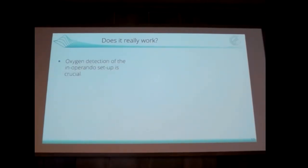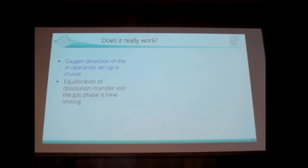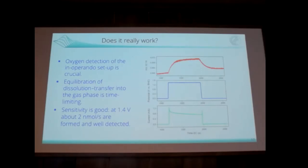Does it really work? Yes — we can detect the little amount of oxygen formed from this specimen while we shine X-rays on it, which also proves we are not doing this by radiolysis. If we switch the potential on and off, oxygen must go up and down accordingly; if there is continuous oxygen, then it is radiolysis. We can do this test — it works. You can see the potential change in the middle, the current response of the system, and the oxygen signal from the mass spectrometer.